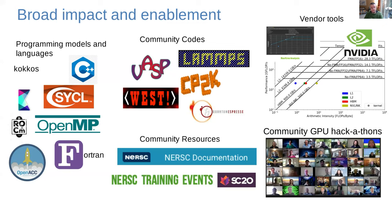One way you can take advantage of Perlmutter even if you don't write your own code is by utilizing the best possible installation or version of community codes that are optimized for Perlmutter. There are a number of applications we provide on Perlmutter that we've worked with developers to improve performance and ensure what we have available is really optimized for the architecture. Checking out NERSC documentation and training events like today's is a great way to get the most out of the system.